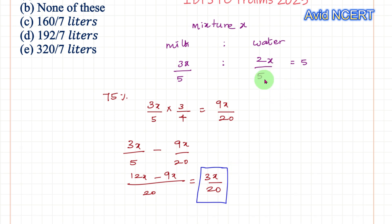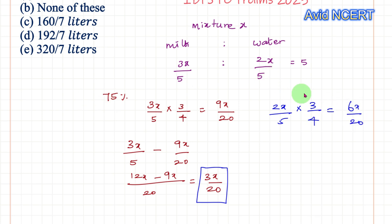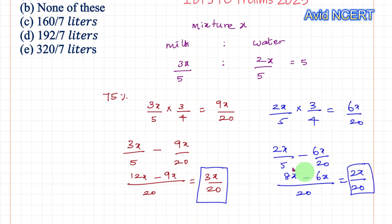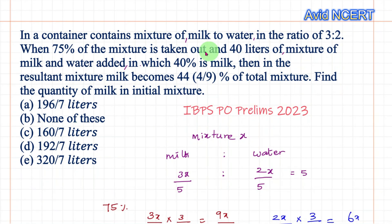Similarly for water: out of 2x/5, three-fourths is taken out, which is 6x/20. So the remaining water is 2x/5 minus 6x/20. With LCM = 20, that is 8x/20 minus 6x/20, which equals 2x/20. So the amount of water remaining in the mixture is 2x/20.